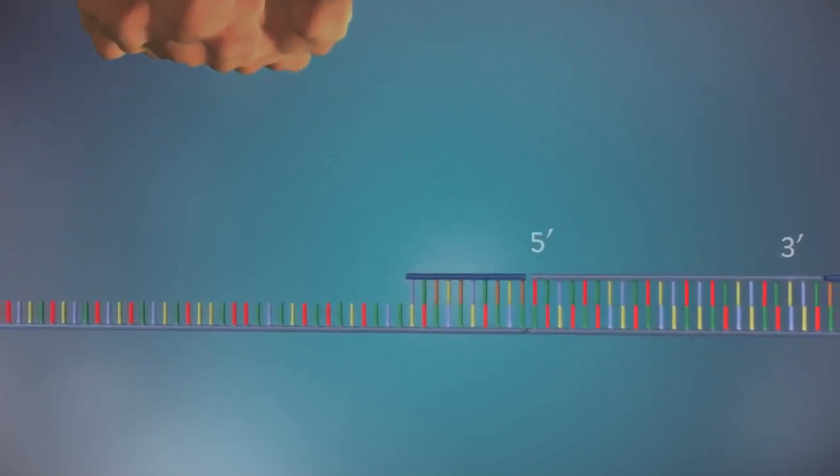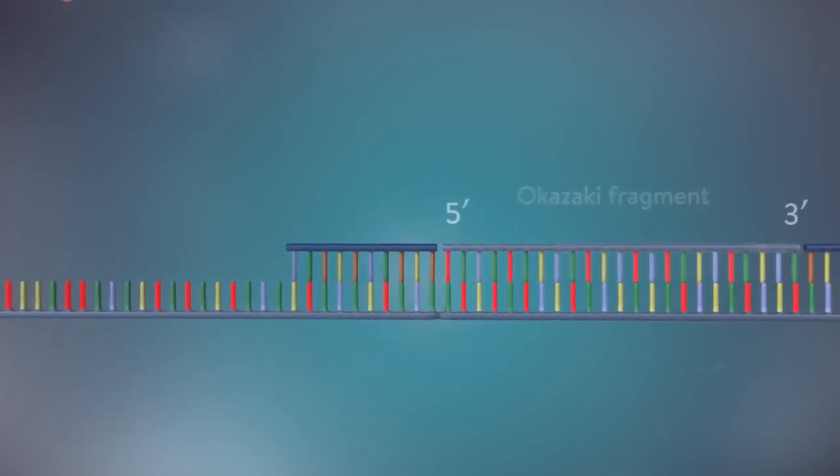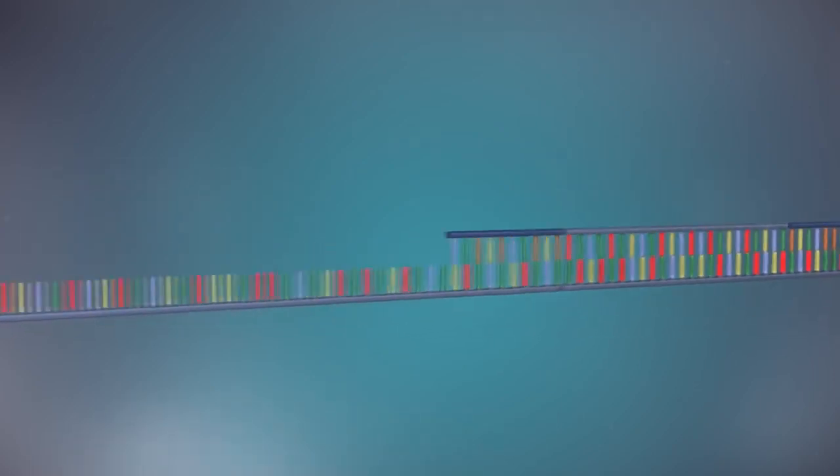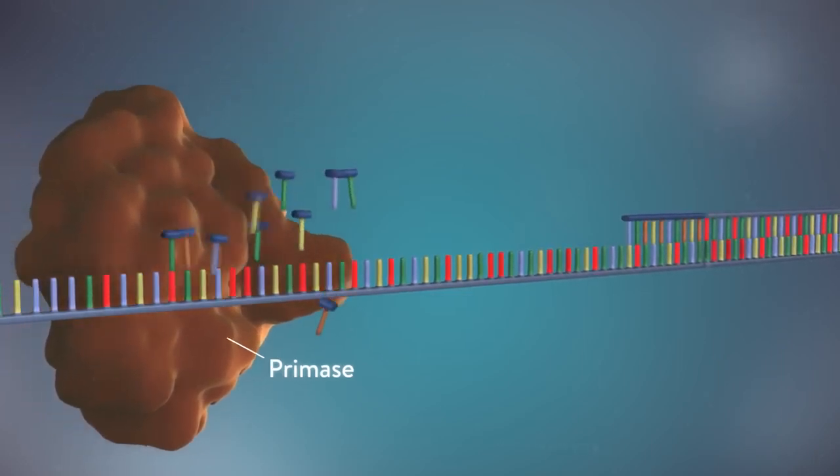The DNA polymerase can therefore only make this strand in a series of small chunks called Okazaki fragments. Each fragment is started with an RNA primer.